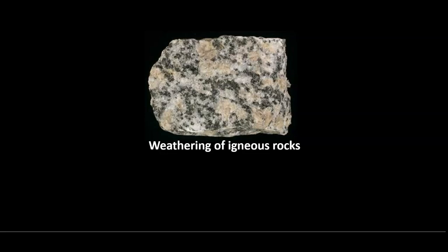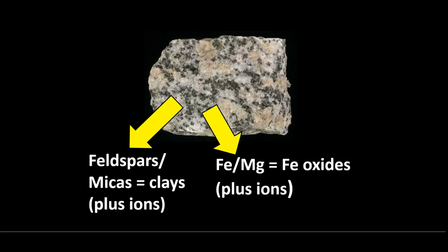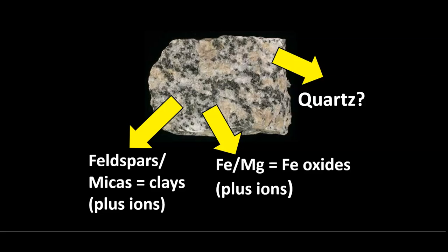Think about what those minerals are going to become when you weather them. Our feldspar and micas are going to undergo hydrolysis and produce clays plus a series of ions in solution — calcium, potassium, sodium, et cetera. We can do something with that stuff in solution, but we also have residual stuff left over. If we attack the black minerals, we end up with things like chlorates, plus some iron oxides, plus ions in solution.